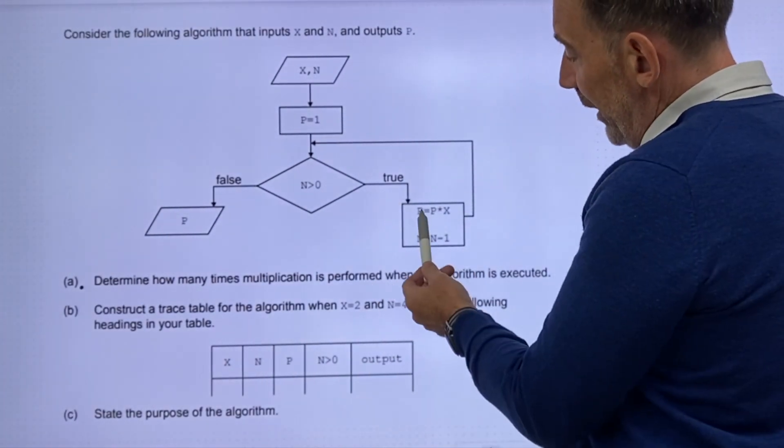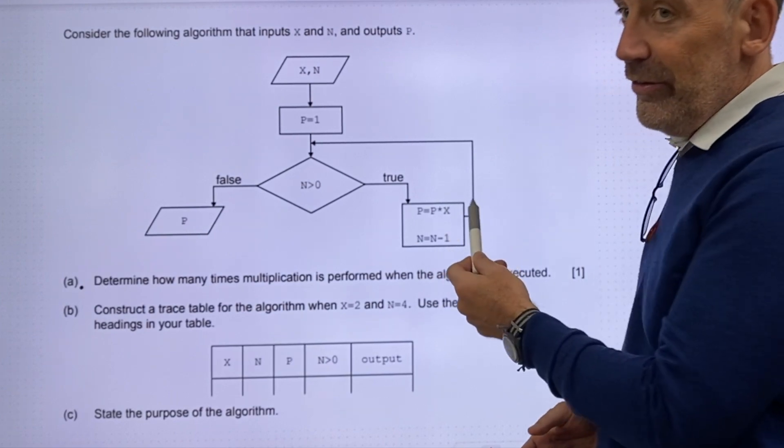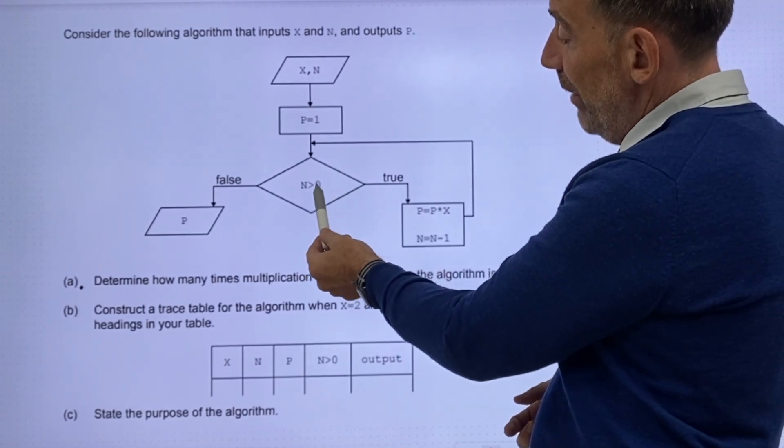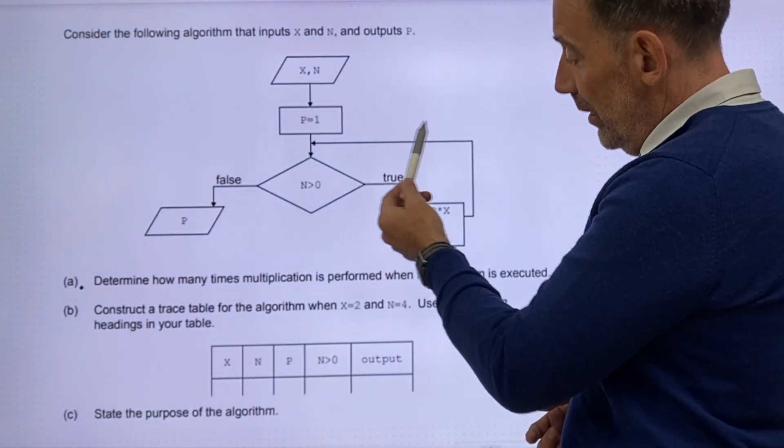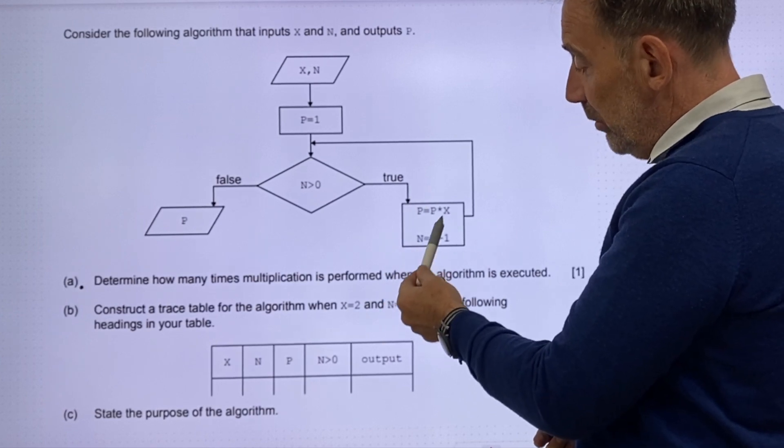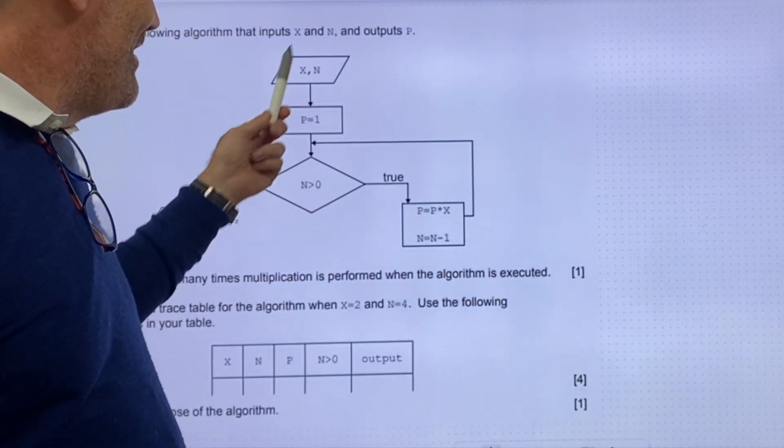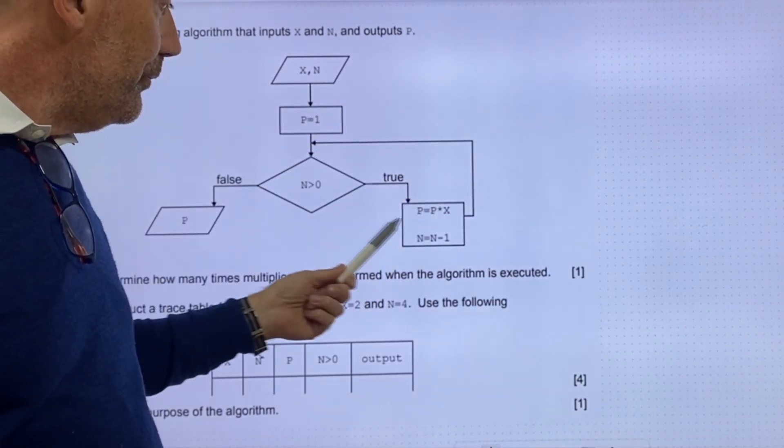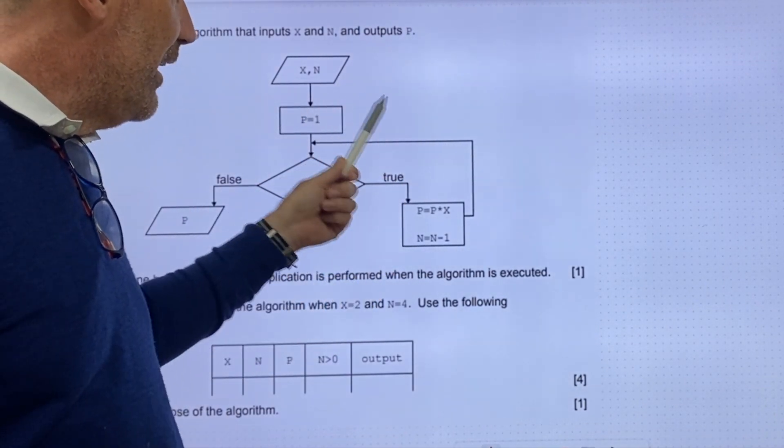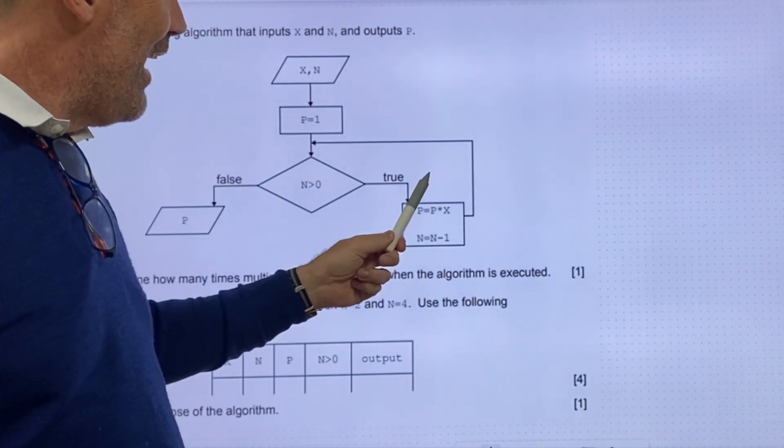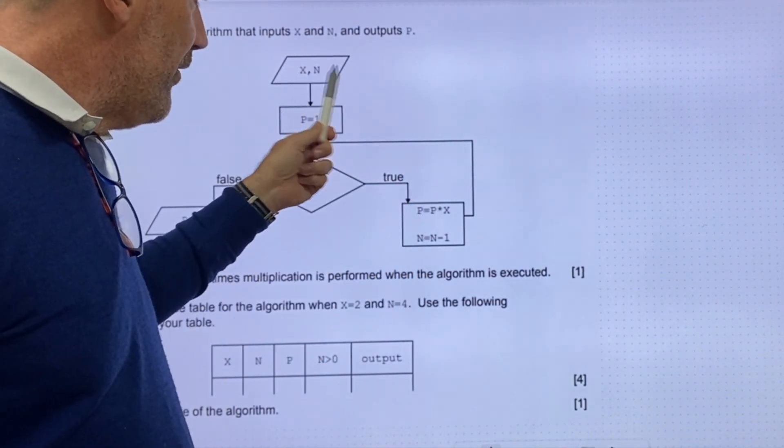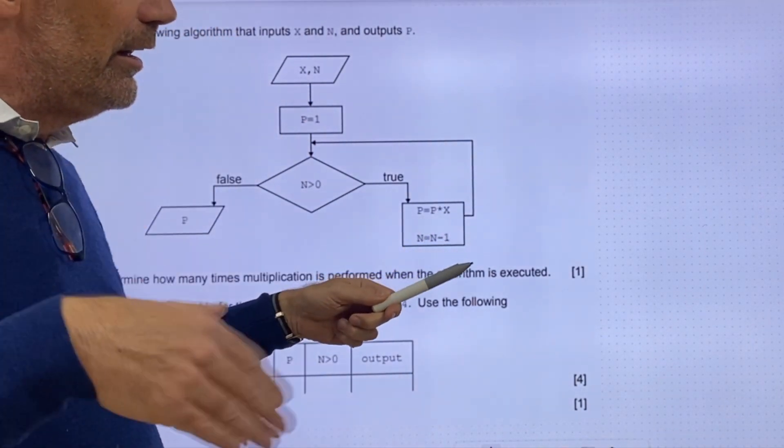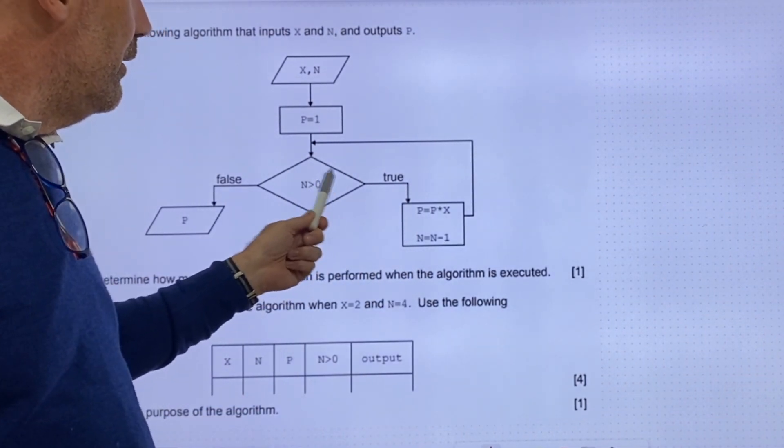For part B, construct the trace table for the algorithm when x equals 2 and n equals 4. Use the following headings in your table. And then C, state the purpose of the algorithm. So, the algorithm performs a multiplication p equals p times x whenever n minus zero is true. It also drops down n equals n minus one. The loop runs n times.